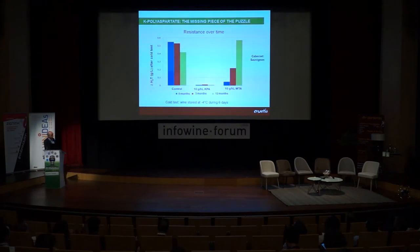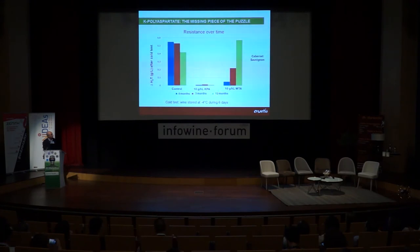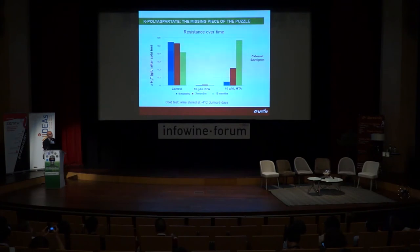Here we have some more evidence after one year. This is a wine treated with potassium polyaspartate in comparison with metatartaric — the same wine treated with both polyaspartate and metatartaric acid. After 12 months, the metatartaric has lost its full stabilizing effect. Potassium polyaspartate is perfectly maintaining the stability level.